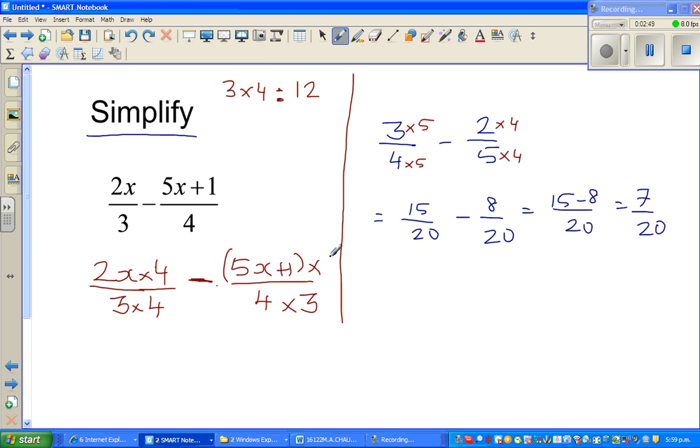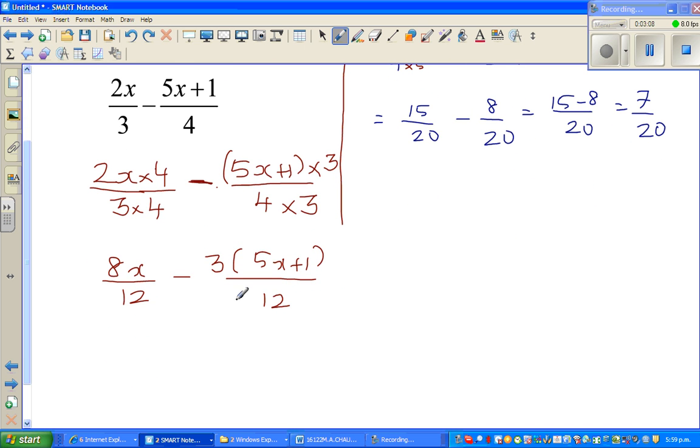So this becomes 8x/12 minus, now this 3 I'm going to write like this: minus 3 bracket (5x + 1) over 12. Now this step here, you probably may not be doing mistake. The next step is where most of you can go wrong.